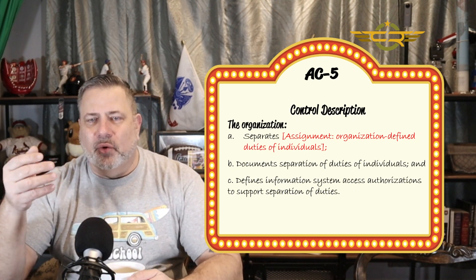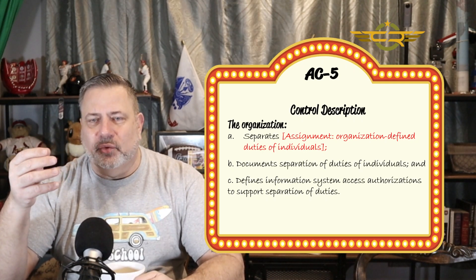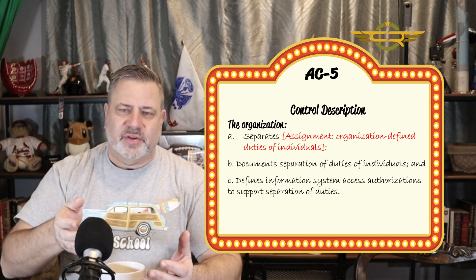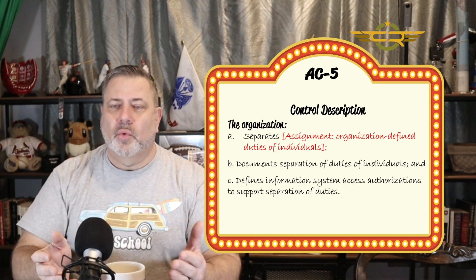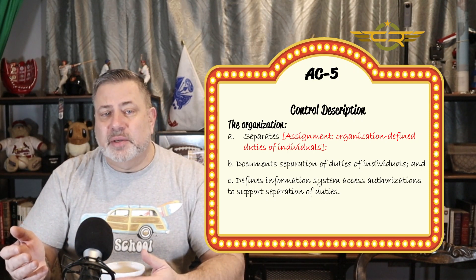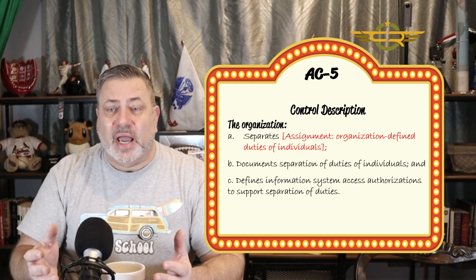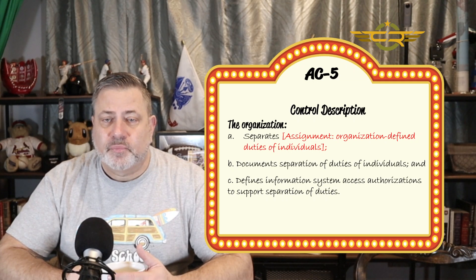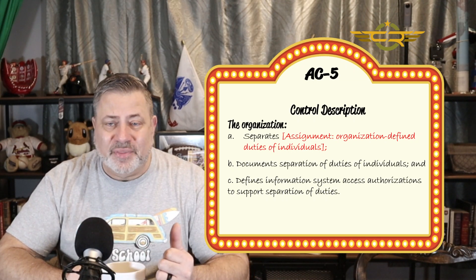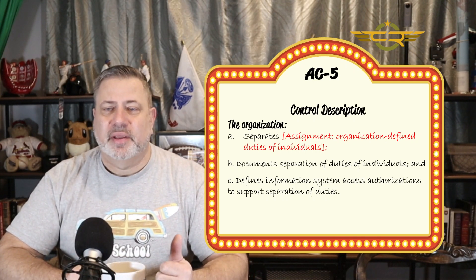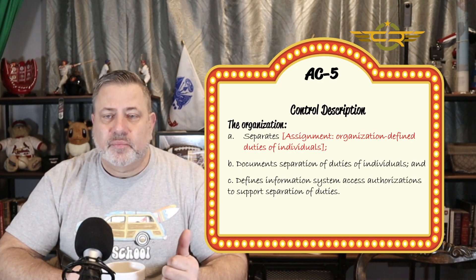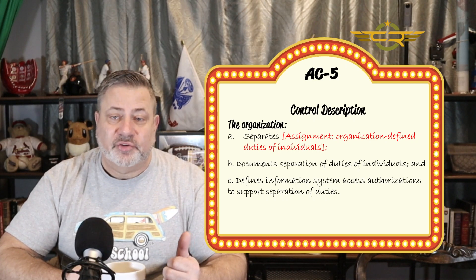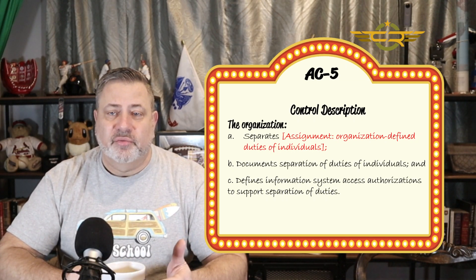We're going to have to assign an organizationally defined individual, or individuals. So who are we separating? We have to separate one role or one set of people, or one type of user from another type of user. And then we have to document that separation of duties and define the information system access authorizations to support the separation of duties.